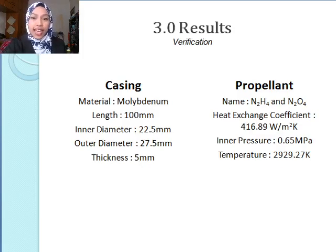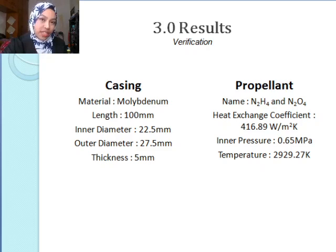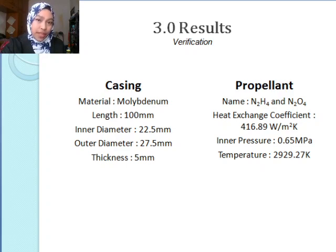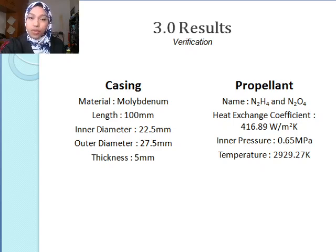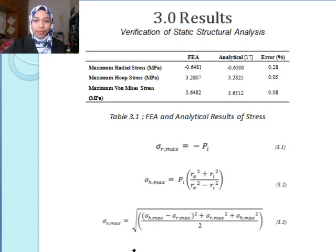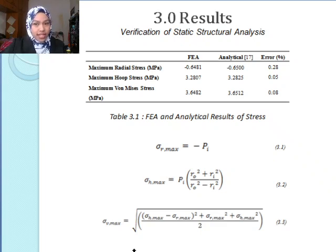For verification purposes, the casing used is molybdenum with a thickness of 5 mm. This is similar to CC5.0, but the only difference is the propellant. The heat exchange coefficient is 416.89 W/m²K, with a temperature of 2929.27 Kelvin. The inner pressure is 6.5 bars, or also known as 0.65 MPa. The static structural analysis shows that there is an error of less than 0.28% for maximum radial, hoop, and von Mises stress, computed from Equations 3.1 to 3.3.